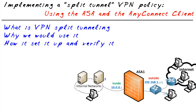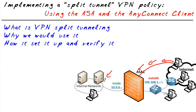One of the default consequences of using a full tunnel is that all packets sent by this user are going to go through that tunnel. So if Bob's going to this server, that's perfect — the traffic goes through the tunnel, hits the ASA, which decrypts the traffic and sends it over to the server. But what if Bob's trying to go to cbtnuggets.com or some other server on the internet? What happens then?